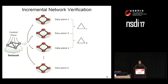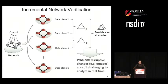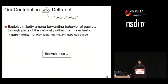In incremental network verification, the data plane checker analyzes differences between data planes, which we denote by the Greek letter delta. The problem is that there can be significant overlap between these deltas. That's problematic when there are disruptive events — say when parts of the network fail — because network failures can result in many changes to the data plane. Even without failures, it's not uncommon to want to verify many data planes in a given time window — particularly when a network administrator wants to try out different configurations before pushing one to production. Our contribution is to show how to exploit the overlap between deltas to avoid inefficiencies in incremental network verification.